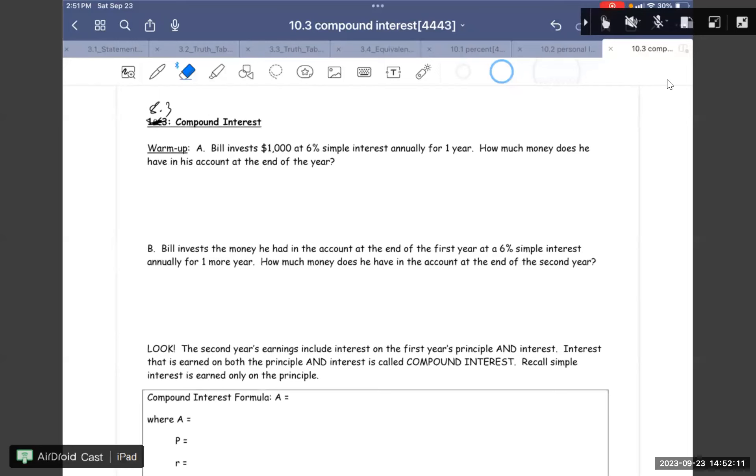Hi everyone, today we go with a compound interest warmup. Bill invests $1,000 at 6% simple interest annually for one year. How much does he have in his account at the end of the year? So this one is just simple interest. I equals PRT. So we have $1,000 times 0.06 times 1 year, so this should be $60. So he gets $1,000 plus $60 for the first year, which is $1,060.